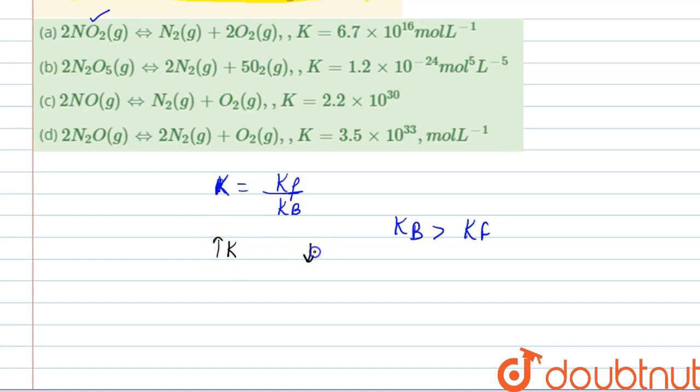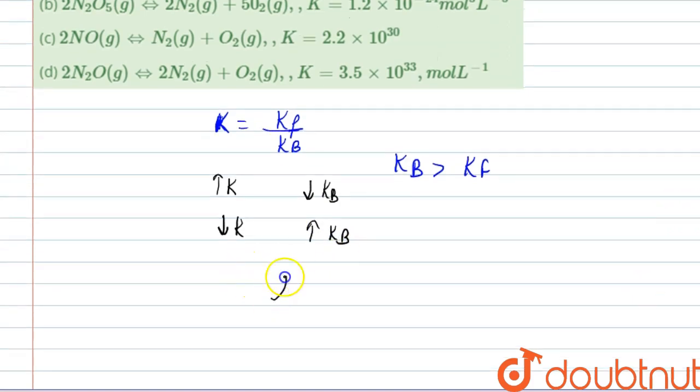And lower will be the value of K, more will be the backward shifting of reaction. So we can say in this case stability depends on lower K values.